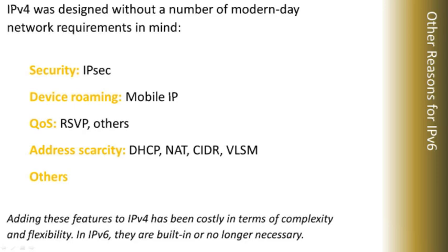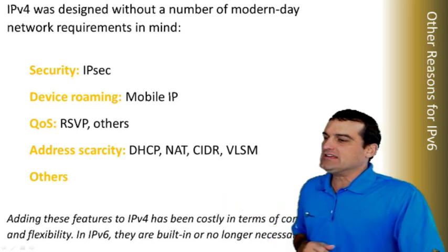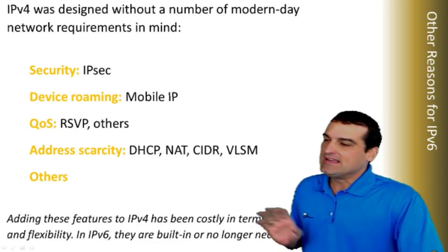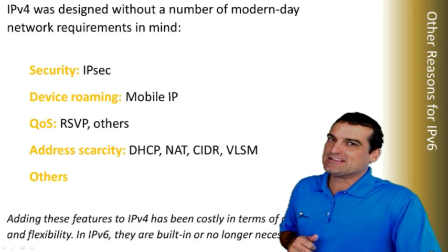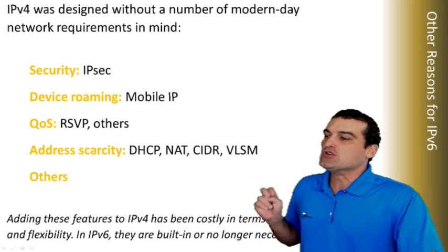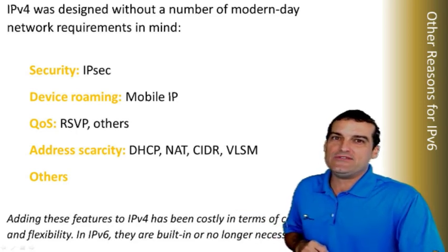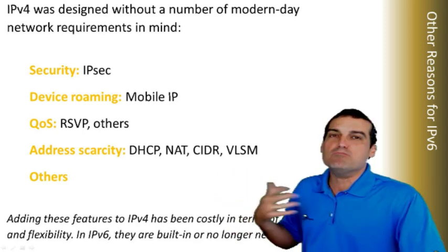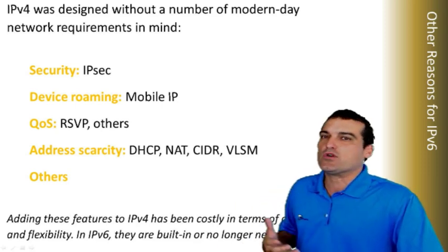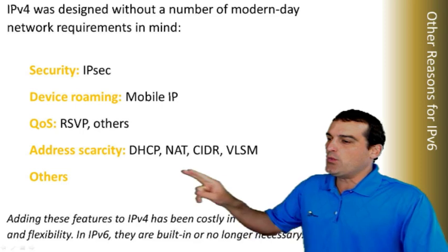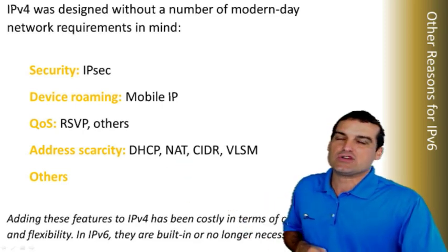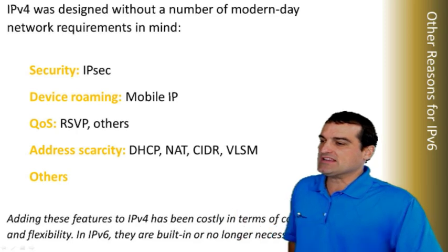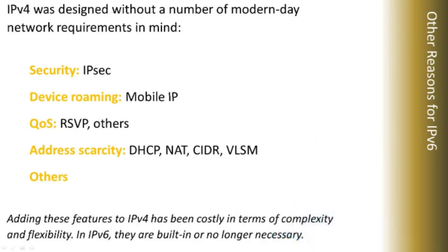There were some technologies that were built to enhance IPv4, and the engineers of IPv6 said, forget this optional enhancement kind of approach. We are going to build these features right in to the IPv6 protocol. So we're going to build security with IPsec right in — it's mandatory. We're going to make sure that mobile IP works better than ever and is more integrated in the protocol. We're going to make sure that we don't need band-aids like network address translation.